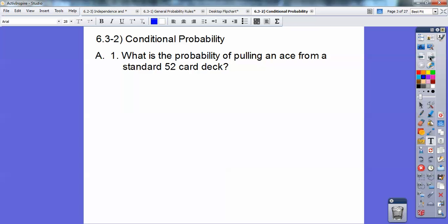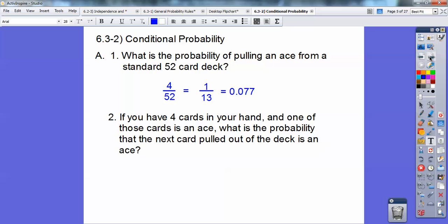Part A: What's the probability of pulling an ace from a standard deck of 52 cards? There's four aces out of 52, so that would be 1/13, or 0.077.